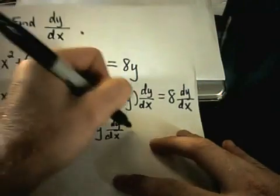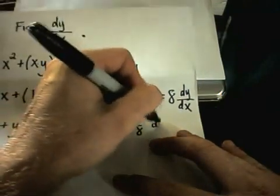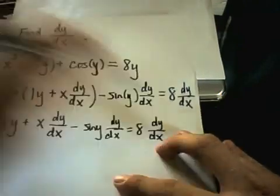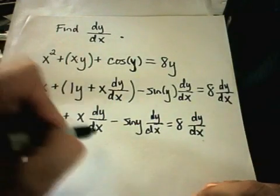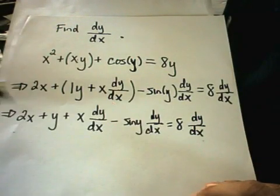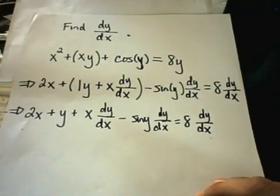dy dx, and that equals 8 dy dx. Okay, so notice I have three terms that have dy dx's, and I have two terms that have no dy dx's.